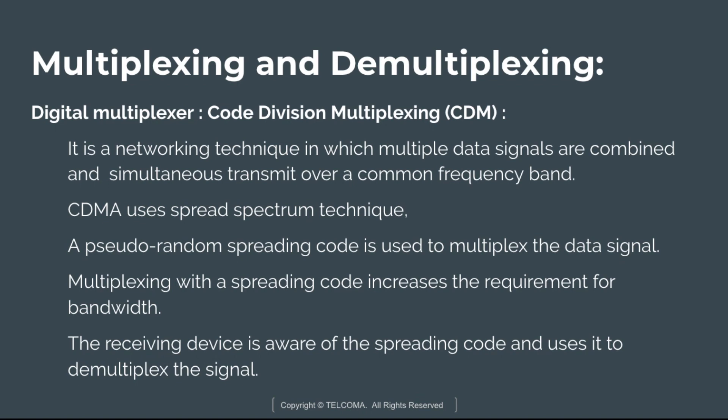Code Division Multiplexing (CDM/CDMA) is a networking technique in which multiple data signals are combined and simultaneously transmitted over a common frequency band. Unlike FDM — which divides signals by frequency — or TDM — which divides by time — in CDMA signals share the same frequency and are transmitted at the same time, but each uses a different code. CDMA uses a spread spectrum technique with a pseudo-random spreading code. This technology was developed in World War II to prevent enemies from intercepting and jamming transmissions, making it very effective for security.